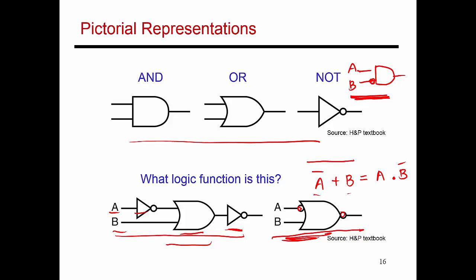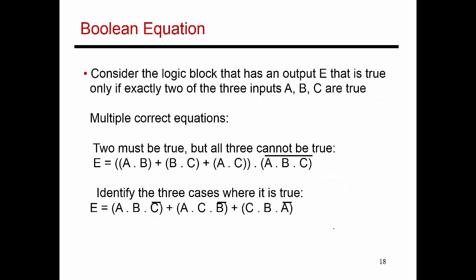So let's go back to that same logic block that we had before where the output was true if exactly two of the inputs was true. So how do I express that with a Boolean algebra equation? One way to do it is this term, which says that this output is true if one of the following cases is true: Either A and B are true, that's exactly two being true, or B and C are the two that are true, or A and C are the two inputs that are true. If any one of these three conditions is true, then my output is going to be true.